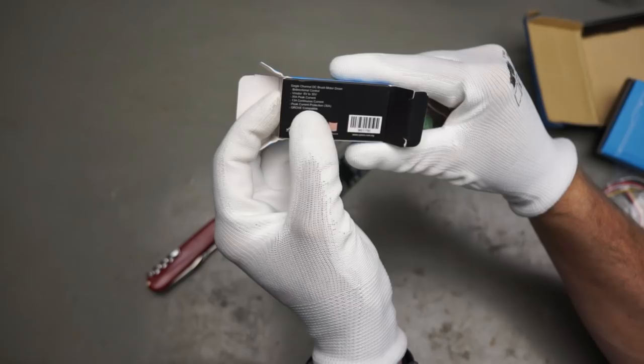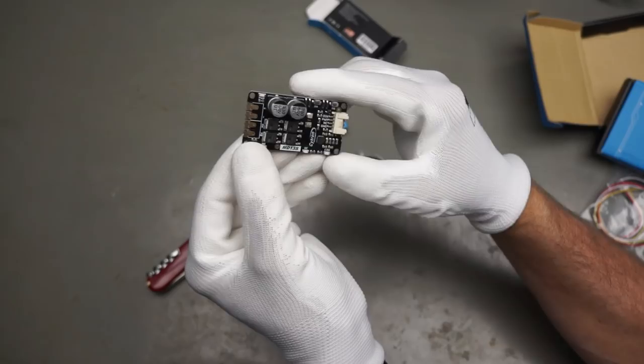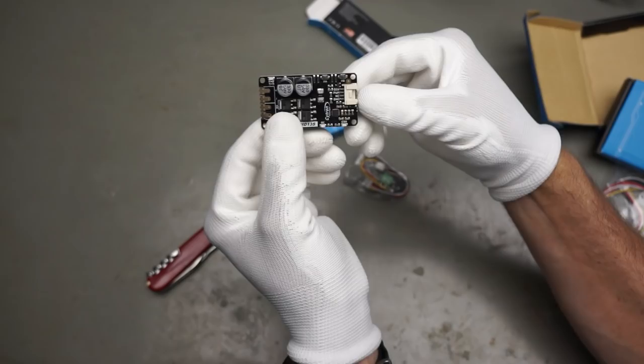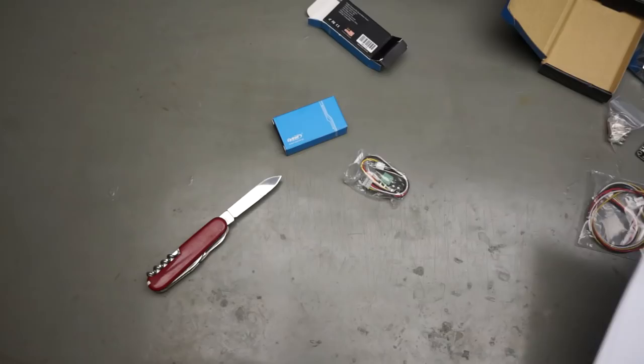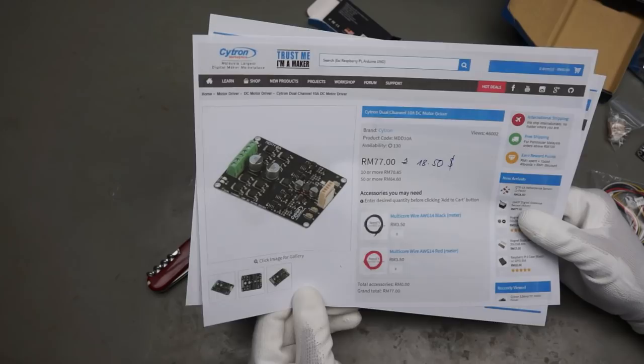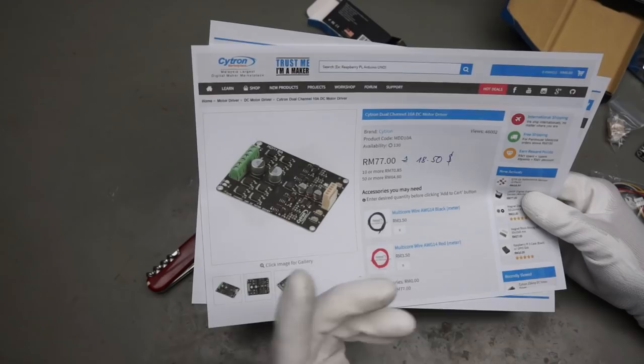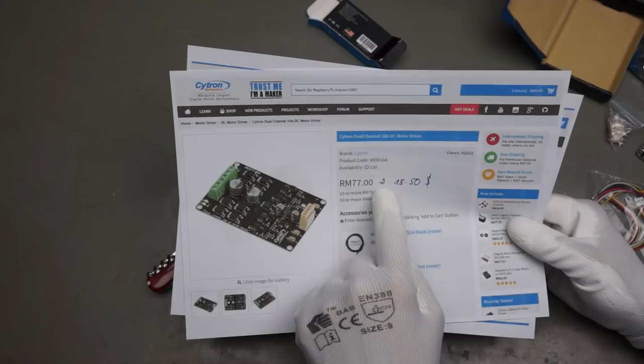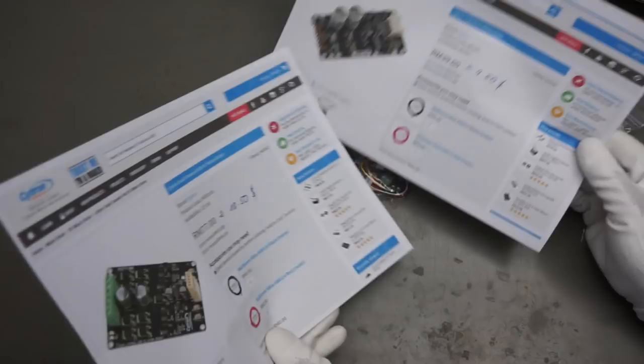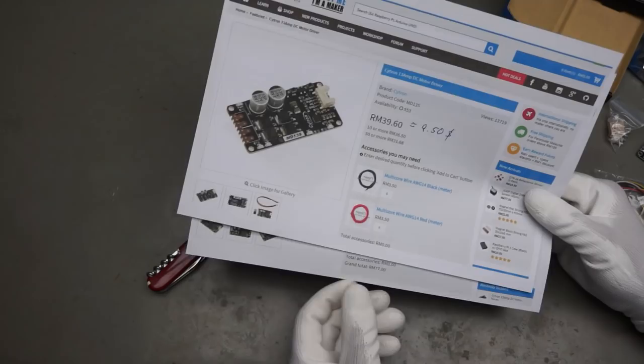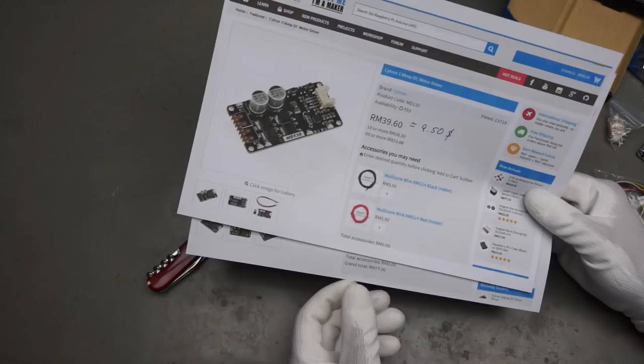They have a very nicely made homepage. They sell many other products like Raspberry Pi and stuff like that. They sell in Malaysian currency. The dual board costs $18.50. And the single channel costs around $9.50. And I like their slogan. Trust me, I'm a maker.